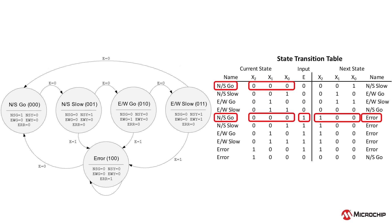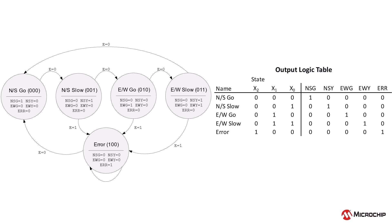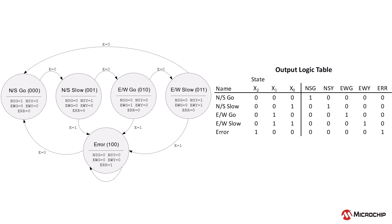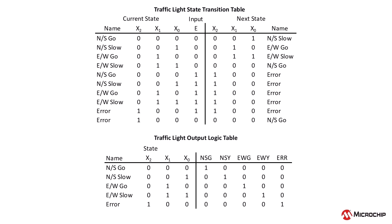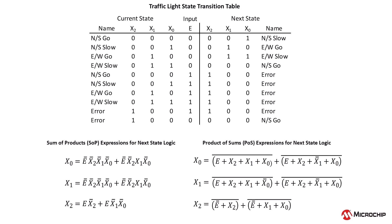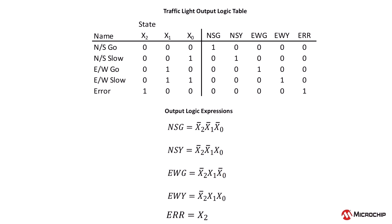After completing the state transition table, the output logic truth table is created to define how the system controls the traffic lights. This table includes columns for each current state bit as inputs and columns for each traffic light output. Since this is a Moore machine, the outputs depend only on the current state. For example, in the first row, state 0-0-0 represents north-south go, where the north-south green light is on and all other lights are off. Boolean equations can then be derived; the sum of products equations and Karnaugh maps for the next state logic were rearranged into product of sums form, ensuring easier mapping to logic gates. Similarly, the output logic equations are determined based on the truth table, defining how the traffic lights respond in each state.